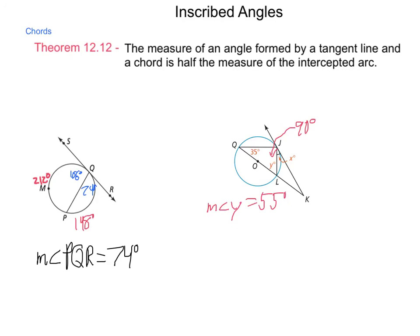Next, let's take a look at the measure of angle X. X is tucked in here at LJK, which is a tangent ray from KJ and a chord JL.